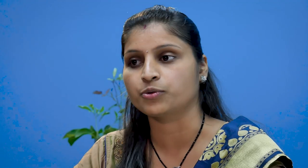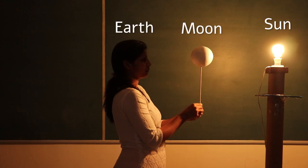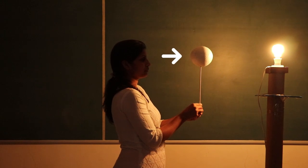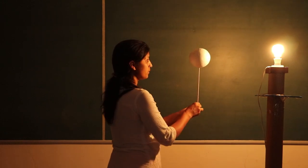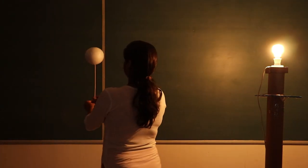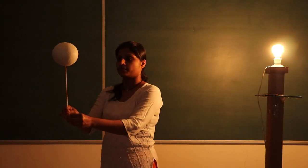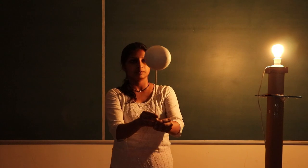Our next activity is to demonstrate how the movements of the sun, earth, and moon result in the phases of the moon. The bulb acts as the sun and the ball acts as the moon. We are like the earth. As you can see, the current position is a new moon — make the moon orbit around us. Students should be encouraged to try this. They will enjoy this activity and understand the concept better.